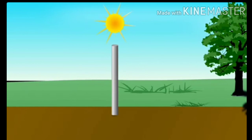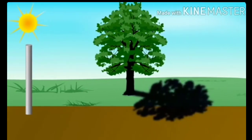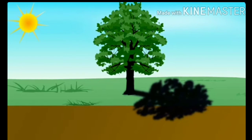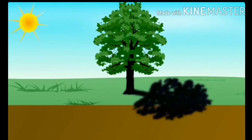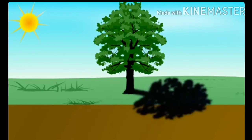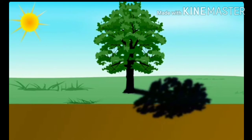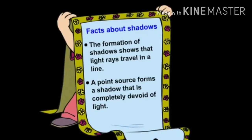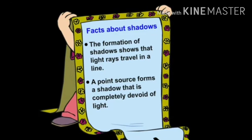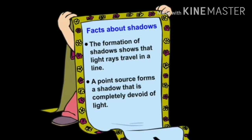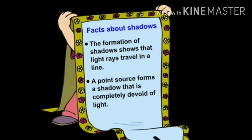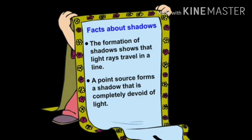So let's talk about shadows in more detail. Look at this tree — it does not allow light rays to pass through it, so it is an opaque object. The region that is completely cut off from light is called the shadow. The formation of shadows shows that light rays travel in a straight line. A point source — a source of light which is as small as a point — forms a shadow that is completely devoid of light. Let's discuss this in detail.